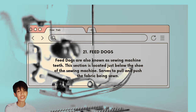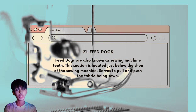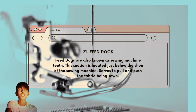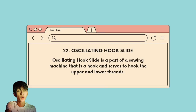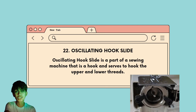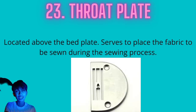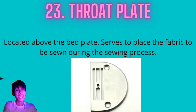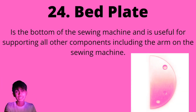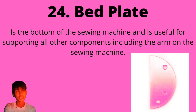Twenty-first, the feed dogs. The feed dogs are also known as the sewing machine feet, located just below the shoe of the sewing machine. They serve to pull and push the fabric being sewed. Twenty-second, the oscillating hook slide. The oscillating hook slide is a part of the sewing machine that is a hook and serves to hook the upper and lower threads. Twenty-third, the throat plate, located above the bed plate, serves to place the fabric to be sewn during the sewing process. Twenty-fourth, the last part, is the bed plate. The bed plate is the bottom of the sewing machine and is useful for supporting all other components, including the arm on the sewing machine.